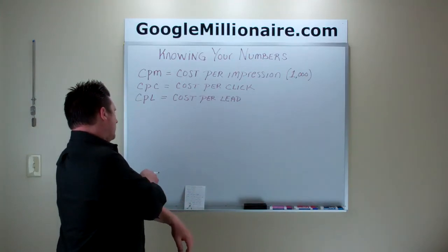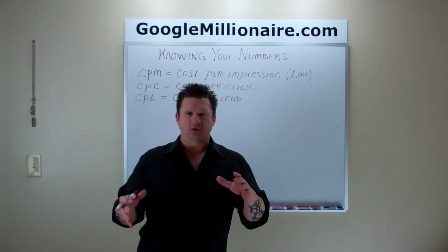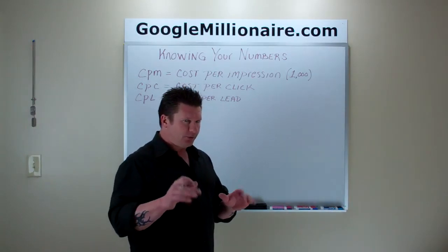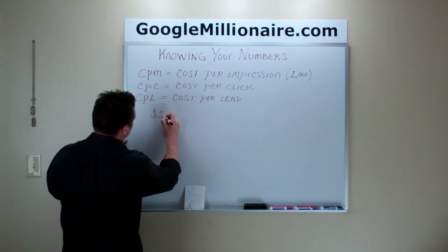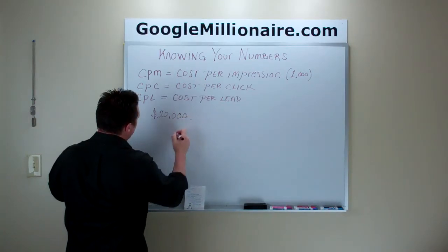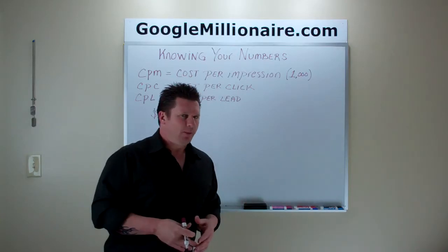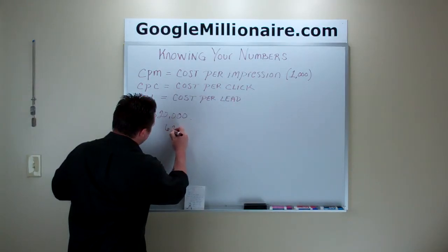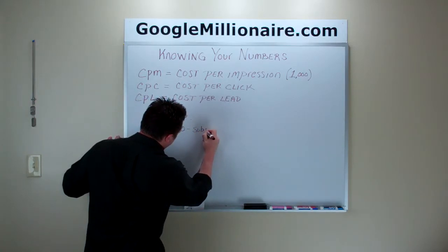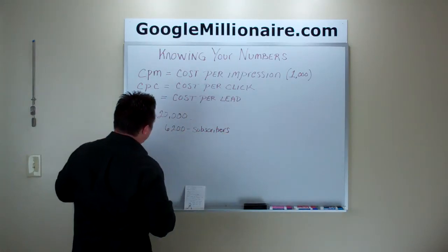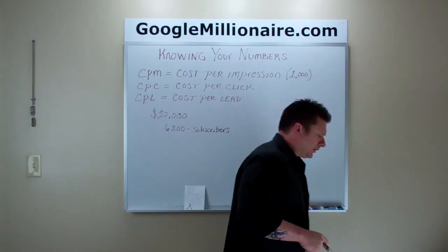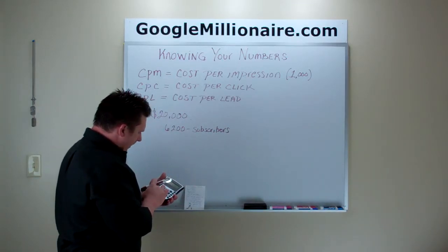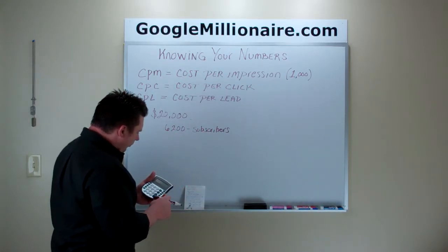Now what I want to do is draw out a simple example to show you how to figure this out. Using even numbers as an example, let's just say I'm making $5,000 per week — or $20,000 per month. So let me write this down. Let's just say Frankie's making $20,000 per month. Now, for even numbers, let's say my email list has 6,200 subscribers.